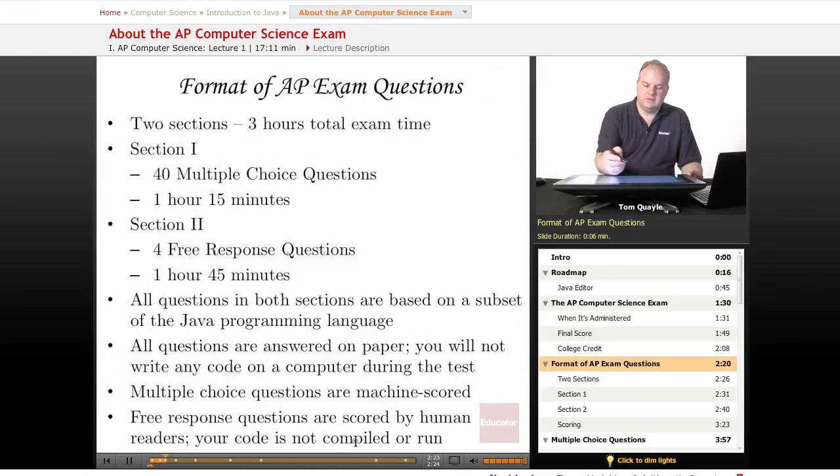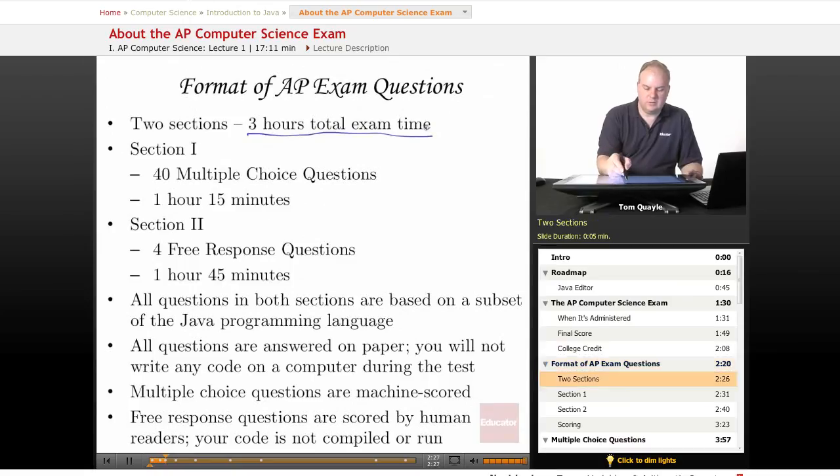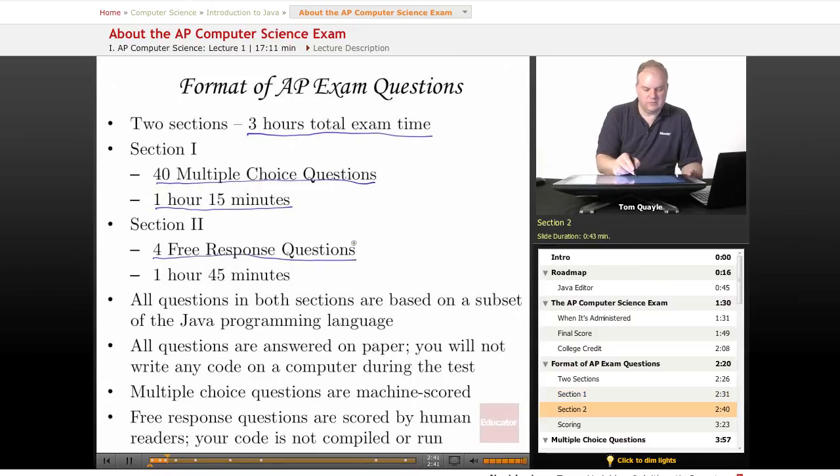There are two sections on the AP exam. You have a total of three hours to do both sections of the exam. Section one is 40 multiple choice questions and you have an hour and 15 minutes to complete those. Then you'll get a short break between the sections and section two is four free response questions which some people refer to as essay questions. And you have an hour and 45 minutes to complete those questions.